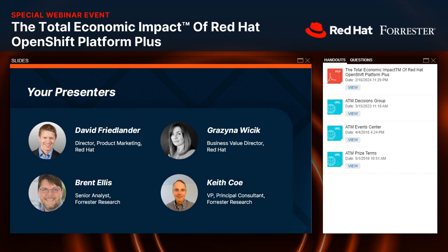Let's get into our incredible discussion. We have a couple of speakers waiting in the wings. Today we'll be chatting with David Friedlander, Director of Product Marketing at Red Hat, and Grosnowiczek, Business Value Director at Red Hat, also Brent Ellis, Senior Analyst at Forrester Research, and Keith Coe, VP and Principal Consultant at Forrester Research. David, I think you'll lead our experts in the discussion today — I'll hand things over to you.